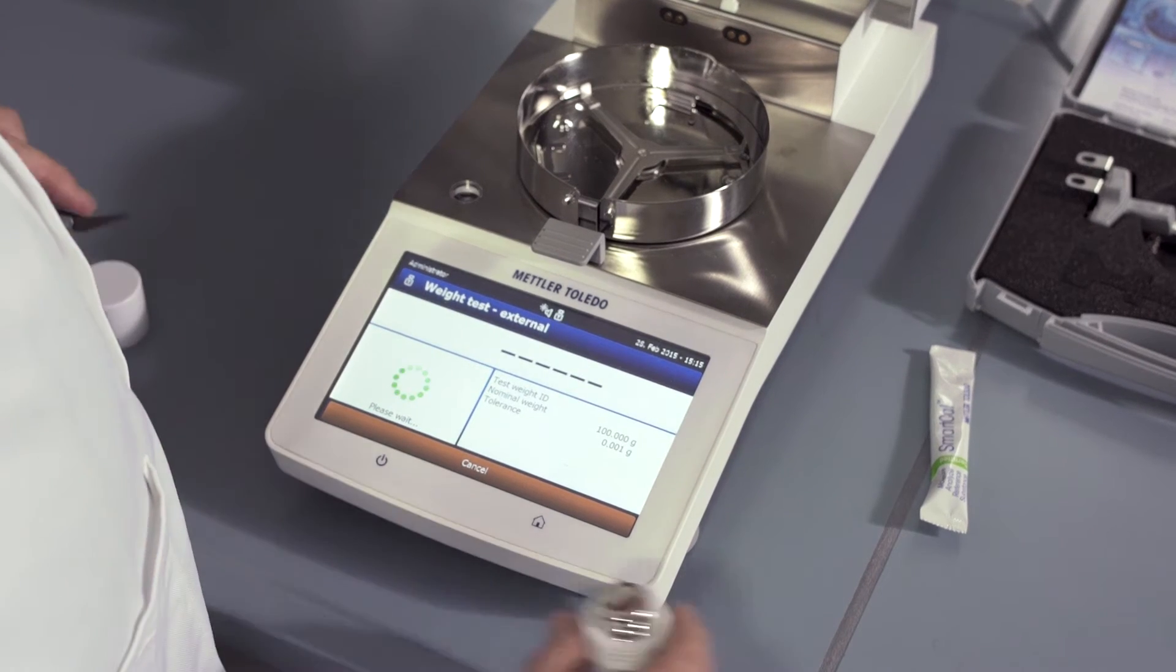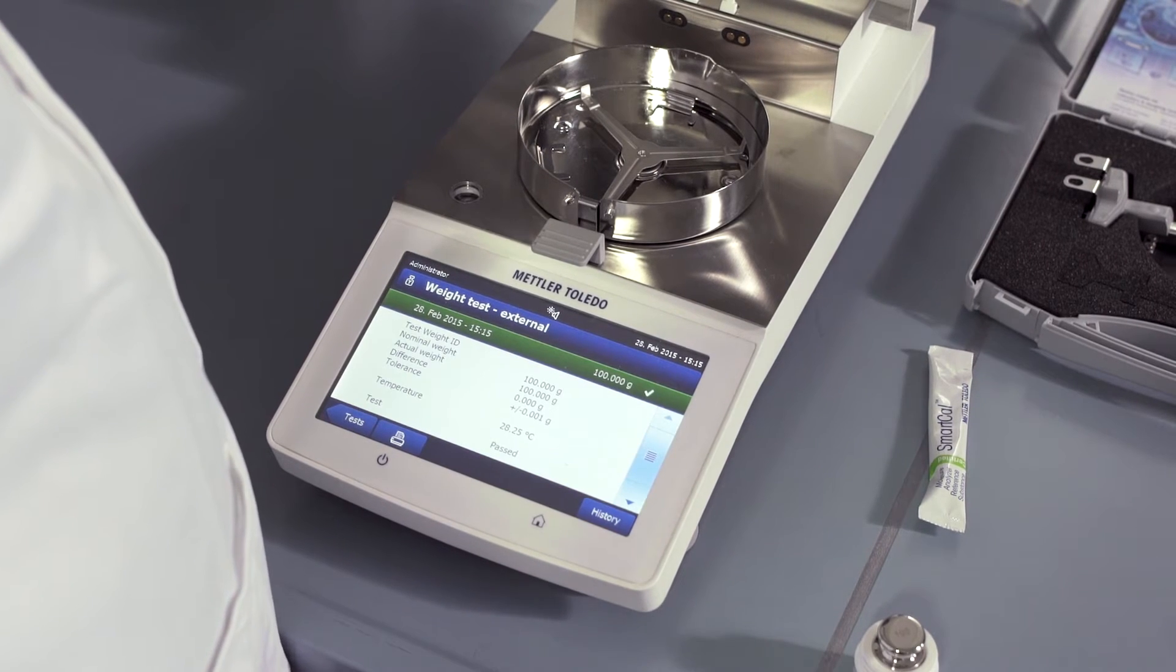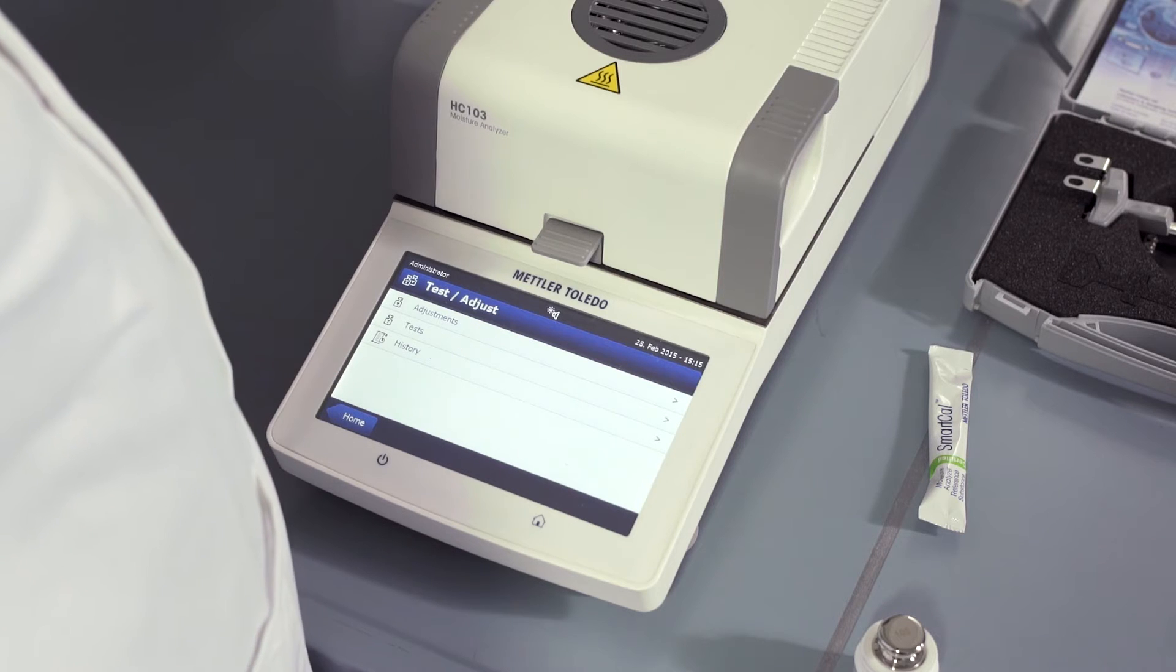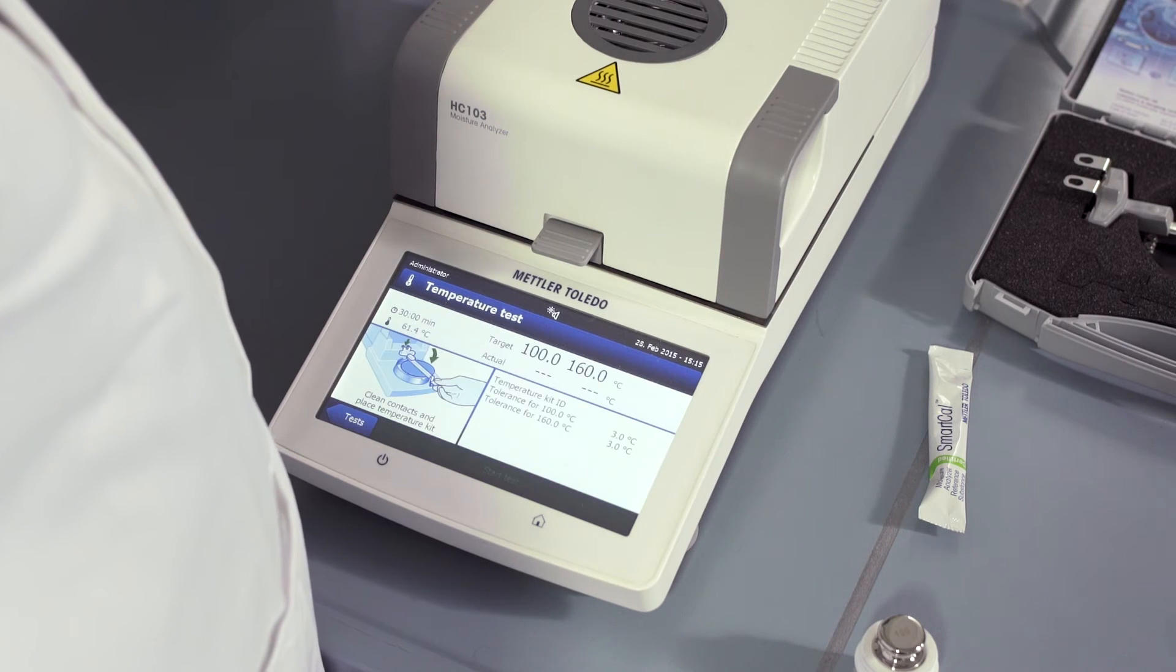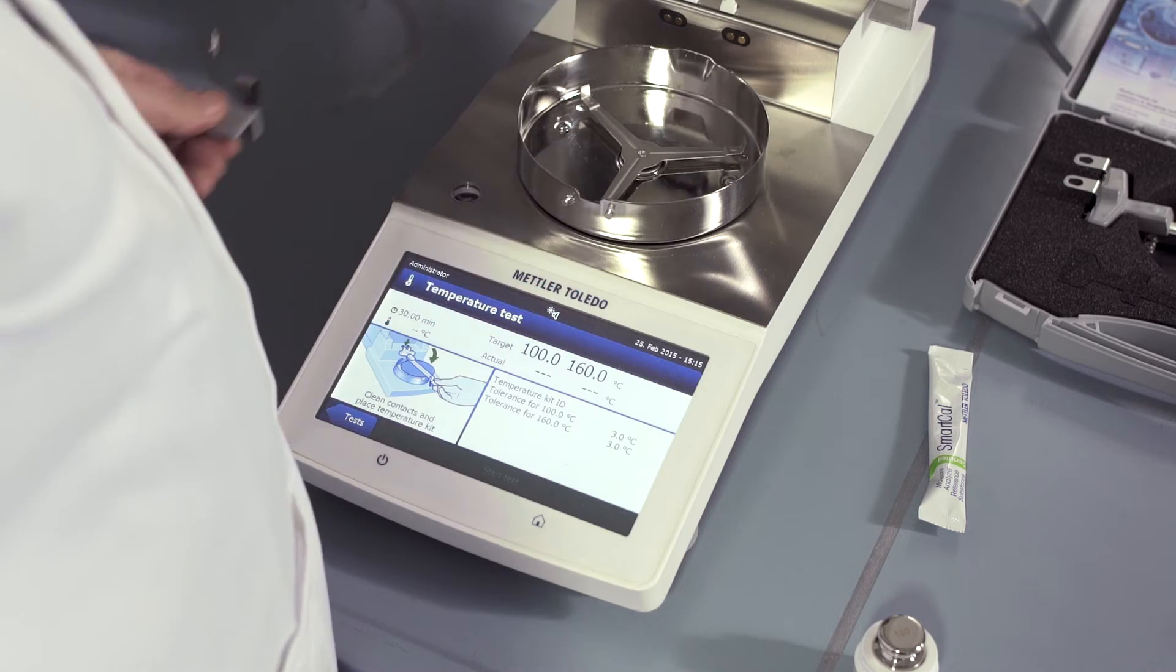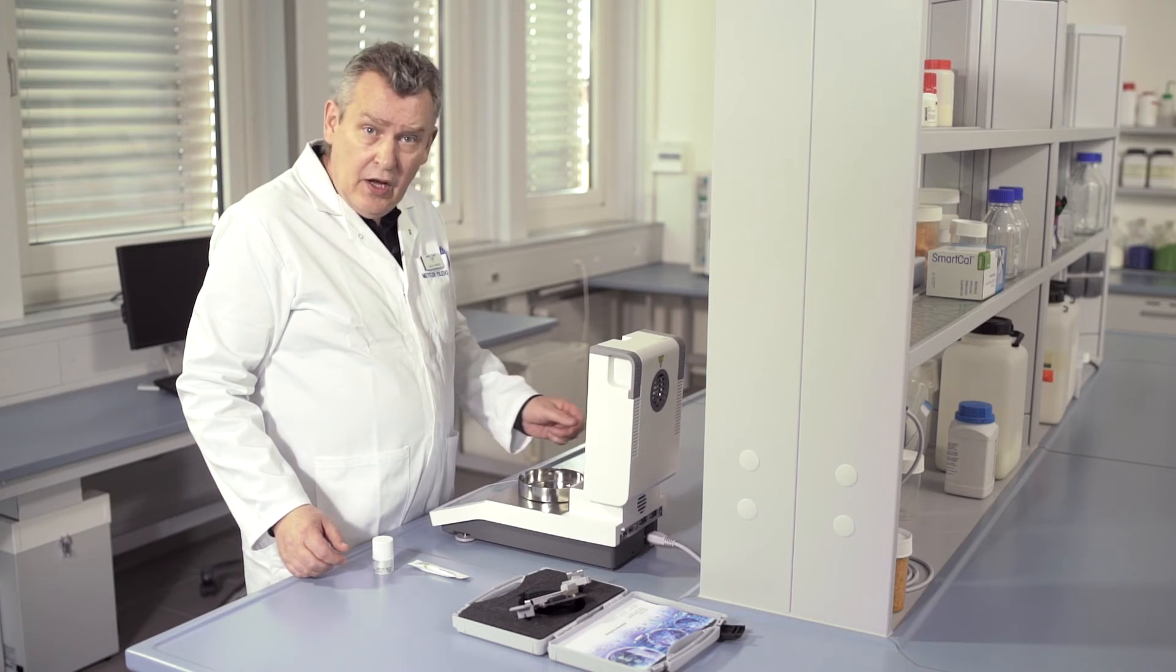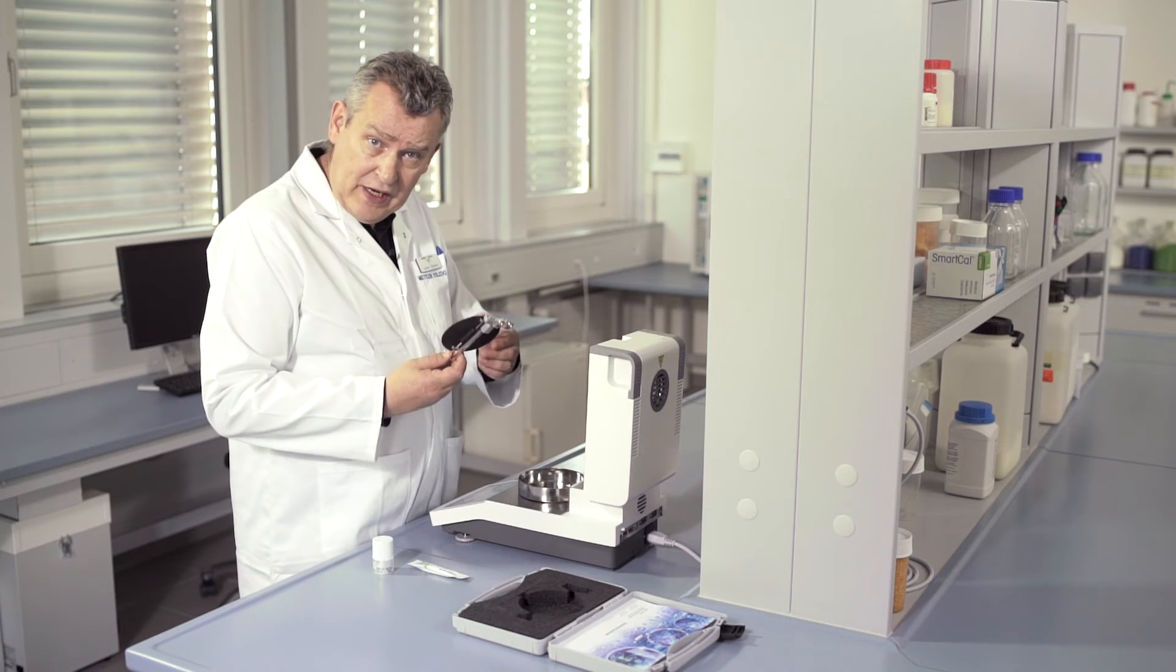To test the heating unit, press the test adjust button and then press tests and select temperature test. Now remove the sample pan handler and the sample pan holder.